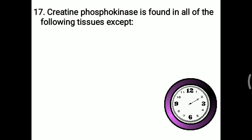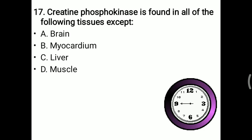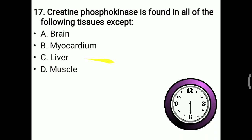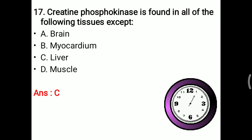Next MCQ: creatine phosphokinase (CPK) is found in all of the following tissues except. Options: brain, myocardium, liver, or muscle. CPK, also called creatine kinase (CK), is an important cardiac biomarker. It has three isoenzymes: CKMM (muscle), CKMB (myocardium), and CKBB (brain). No isoenzyme fraction is present in the liver. So CPK is found in all tissues except liver. The right answer is C — liver.